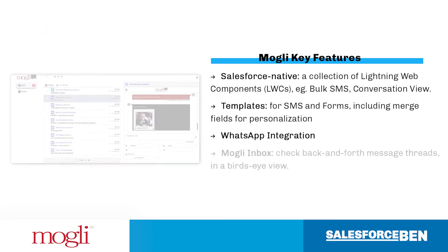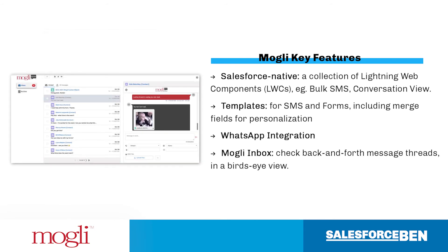Mowgli Inbox is fresh from their product development team. Mowgli Inbox will enable users to check back-and-forth message threads in a bird's-eye view. It's similar to any email inbox, and it aims to help users manage their conversations effectively, regardless of which Salesforce record they're actually attached to.